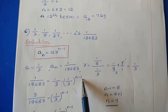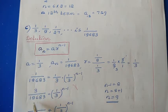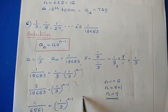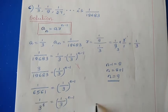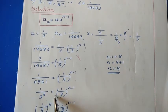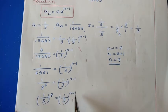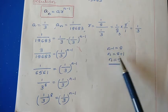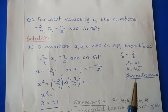Bringing 3 to the other side: 3/19683 = (1/3)^(n-1), which gives 1/6561 = (1/3)^(n-1). Now 6561 = 3^8, so 1/3^8 = (1/3)^(n-1). Equalizing the powers: n-1 = 8, so n = 9. Therefore it is the 9th term. Next, Question number 6.